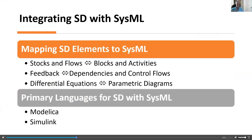I'll do a quick mapping of system dynamics elements to SysML. System dynamics has stocks and flows: stocks are accumulations or state variables of a system, and flows are the ways the system changes state. These are continuous variables. In other modeling tools like Markov chains, you can have more discrete and probabilistic approaches, but I like to use continuous variables to approximate those more discrete behaviors. Stocks and flows can be mapped to blocks and activities in SysML.